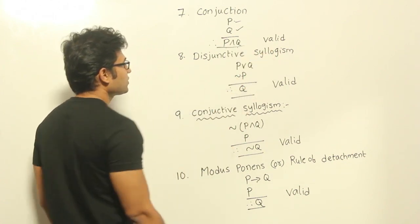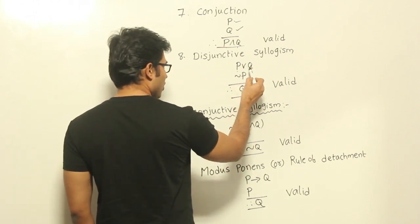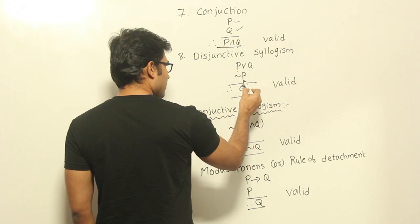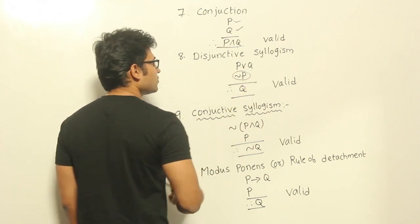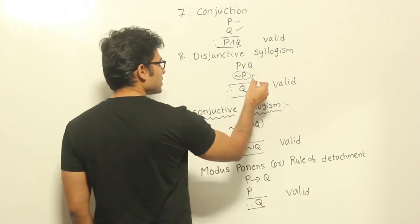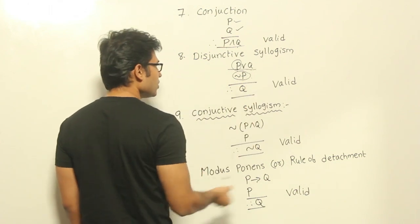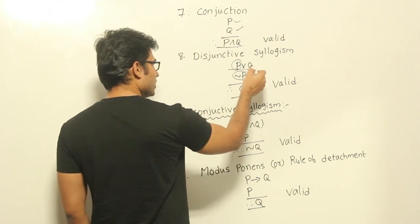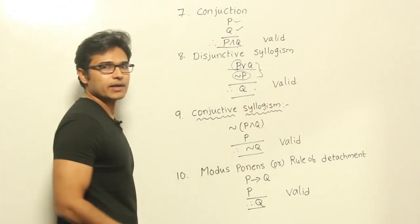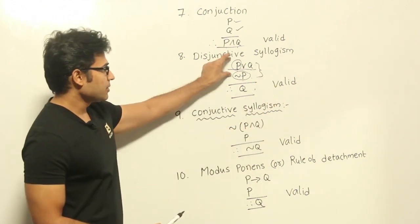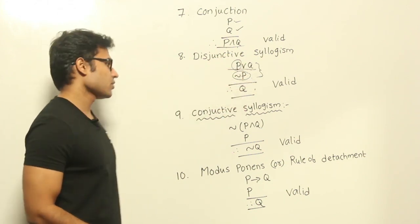Disjunctive syllogism: if P∨Q is true and ¬P is true, then P is false. If P is false and P∨Q still has to be true, that is possible only when Q is true. Therefore from these two premises — P∨Q and ¬P — you can derive that Q is true. This is a valid argument.